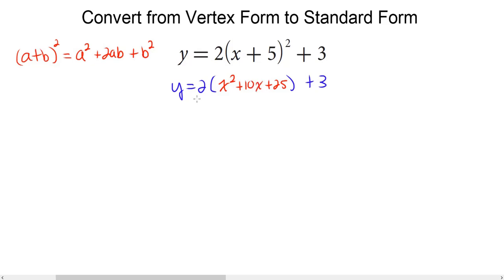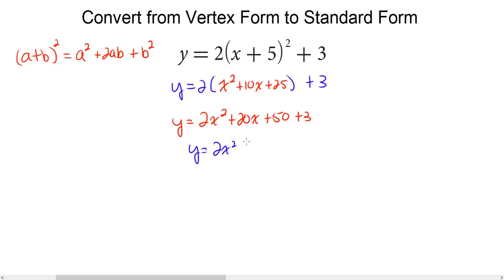Next, we distribute this 2: 2 times x squared is 2x squared, 2 times 10x is 20x, and 2 times 25 is 50. Bring down the plus 3. Then combine like terms: 50 plus 3 is 53. So y equals 2x squared plus 20x plus 53. We've converted the quadratic function from vertex form to standard form.